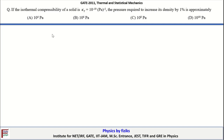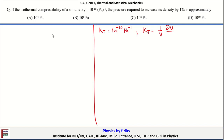The next problem is from isothermal compressibility. The isothermal compressibility of a solid is given as κ_T = 10⁻¹⁰ Pa⁻¹. For an ideal gas, κ_T = -(1/V)·(dV/dP)_T = 1/P. We can quickly verify this by evaluating dV/dP from the ideal gas law PV = RT, which gives dV/dP = -RT/P², and thus κ_T = 1/P.